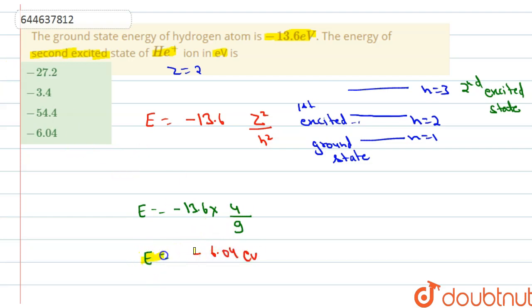So after solving this, we will get E equals minus 6.04 electron volt. So our answer is energy equals minus 6.04 electron volt. So the appropriate option is option number D. This is answer.